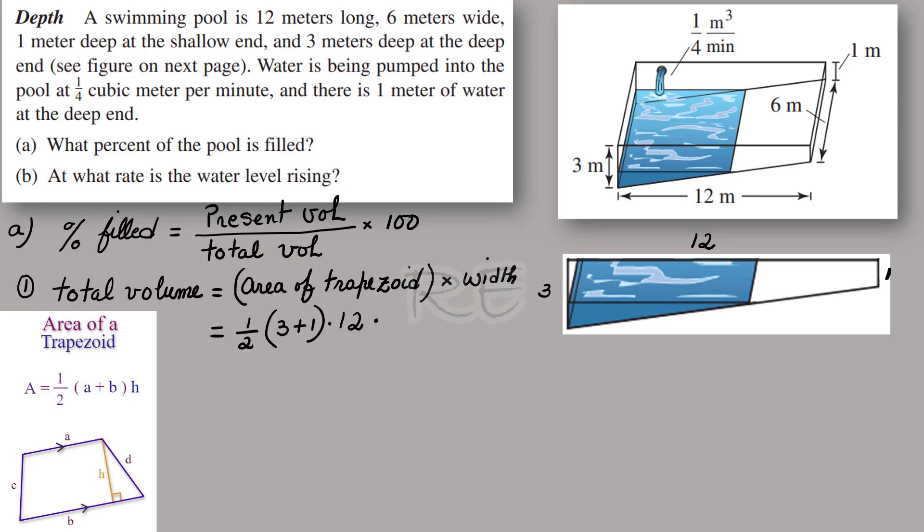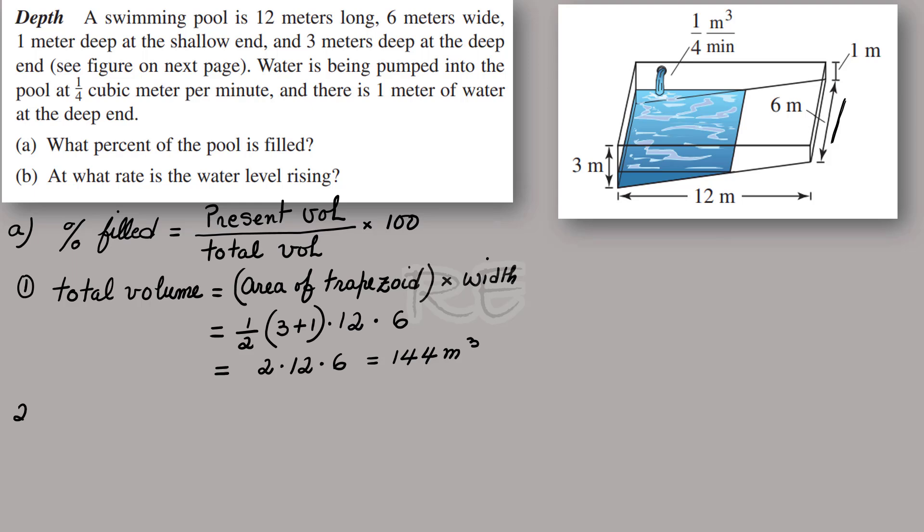The width doesn't change and is 6 meters. 3 plus 1 is 4, half of 4 is 2. You get 2 times 12 times 6, which is 144 cubic meters.